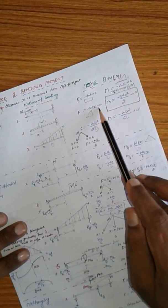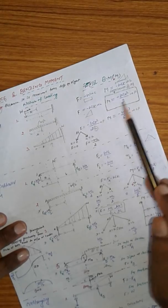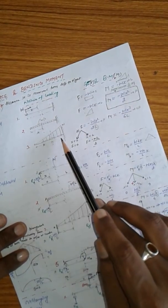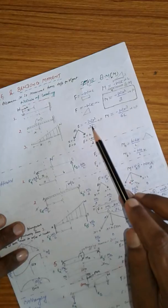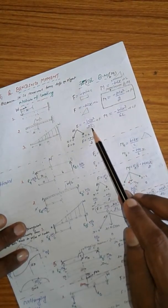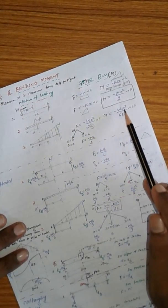In this case, shear force is minus wx and moment is minus wx squared upon 2. Third one is UVL at cantilever beam. In this case, shear force is minus wx squared upon 2L and moment is minus wx cubed upon 6L.